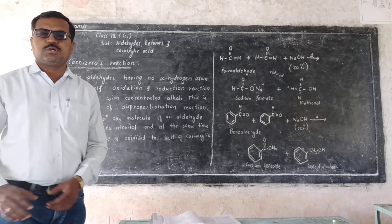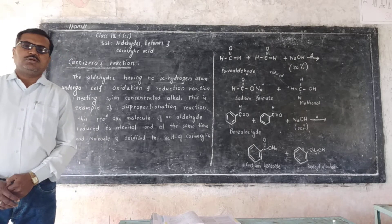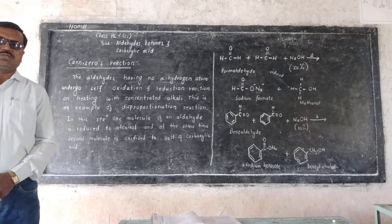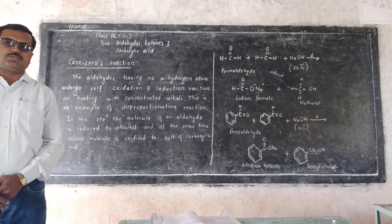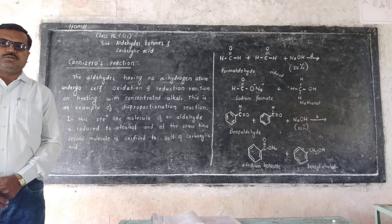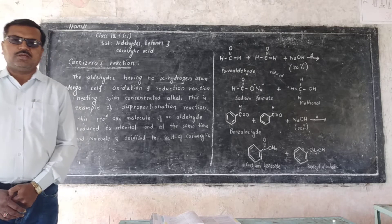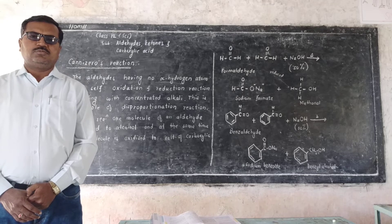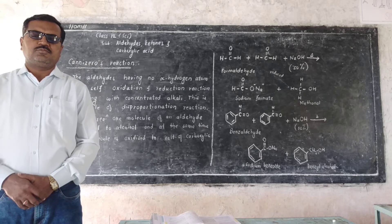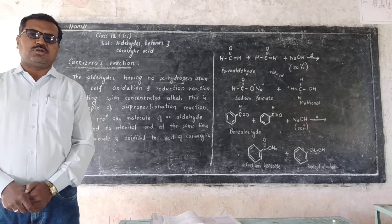So students, we have learned aldol condensation. In aldol condensation, the aldehydes or ketones which contain active alpha-hydrogen atoms are heated with sodium or potassium hydroxide to produce aldol or ketones.